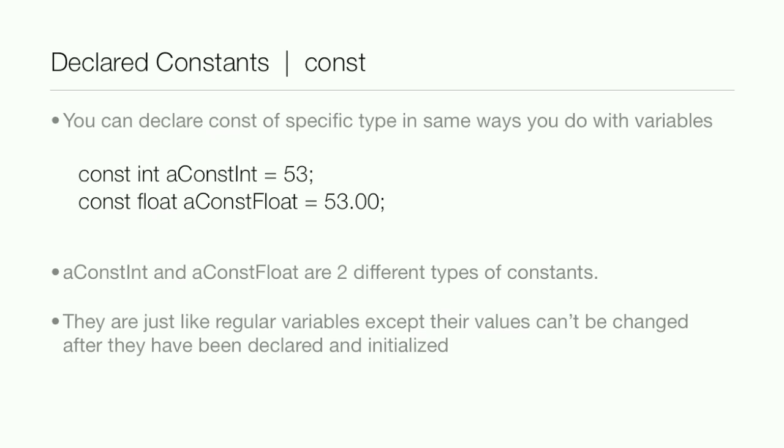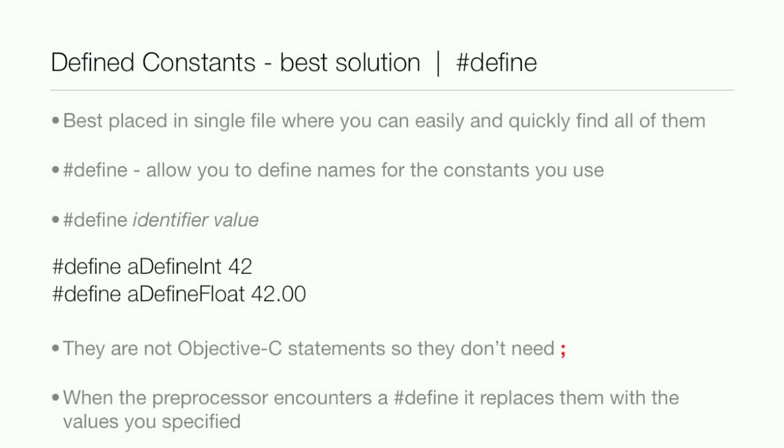Now the best solution for constants is a defined constant. These are usually placed in a single file where you can easily and quickly access all of them. The setup is #define, and this allows you to define names for the constants you use. The total setup is #define, the identifier, and then the value. So you see #define aDefineInt 42 and then below #define aDefineFloat 42.00. They're not Objective-C statements so they don't need a semicolon.